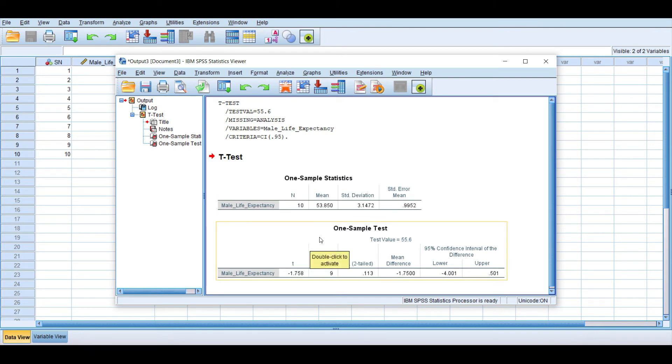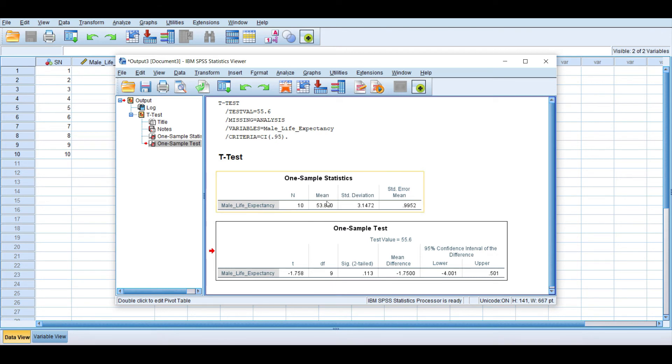Then the second table, we'll have the one sample t-test. This particular one sample t-test here, we'll have the t-value as minus 1.758. We'll have our degree of freedom which is n minus 1, that's total number of observation minus 1, which is 9. Then we'll have our p-value, the p-value here is 0.113. We'll have the mean difference. The mean difference simply means the difference between the sample mean and the population mean. So if you subtract 53.850 minus 55.6, you have minus 1.75. That is the sample mean minus population mean gives us this particular mean difference here which is minus 1.750.